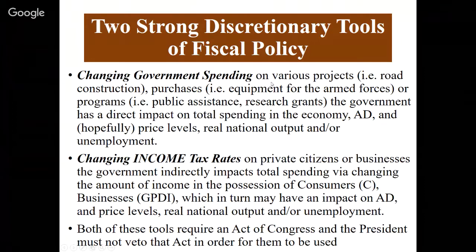Changing government spending on projects like road construction, purchases like equipment for the armed forces, and social programs like public assistance and research grants gives the government a direct impact on total spending, aggregate demand, and hopefully price levels, real GDP, and unemployment. Changing income tax rates on private citizens will affect consumer spending. For example, the recent tax package involved cuts in both personal and corporate income tax. Reducing personal income taxes means people keep more of their paycheck, which hopefully they spend. Reducing corporate income tax means businesses spend more of their profits, which boosts aggregate demand.